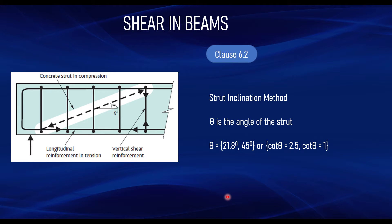The value of cot theta must always be between 2.5 and 1. When cot theta equals 2.5, that is the minimum allowable angle, corresponding to theta equals 21.8 degrees. When cot theta equals 1, that is the maximum allowable angle, corresponding to theta equals 45 degrees.